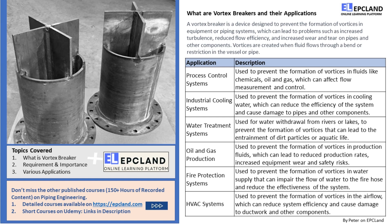Now, let's take a closer look at some of the applications of vortex breakers mentioned in the table. In process control systems, vortex breakers are used to prevent the formation of vortices in fluids such as chemicals, oil, and gas. These vortices can affect the accuracy of flow measurement and control, which can be a major issue in industries like chemical production. Industrial cooling systems also use vortex breakers to prevent vortices in the cooling water — without them, vortices can reduce cooling efficiency and cause damage to pipes and components. In water treatment systems, vortex breakers are used to prevent vortex formation when withdrawing water from rivers or lakes, as these vortices can lead to the entrainment of dirt particles or aquatic life, seriously affecting water quality.